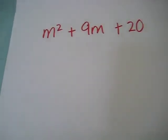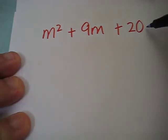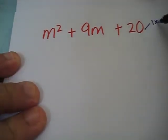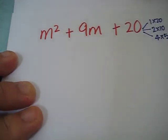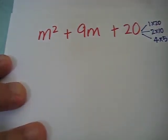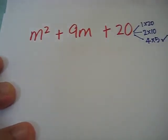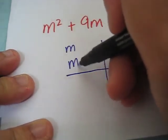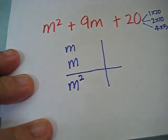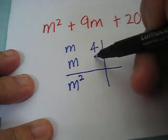Let's try to factorize this using the cross method. 20 can be expressed as 1 times 20, 2 times 10, and 4 times 5. To get 9m, we will check out with this pair.